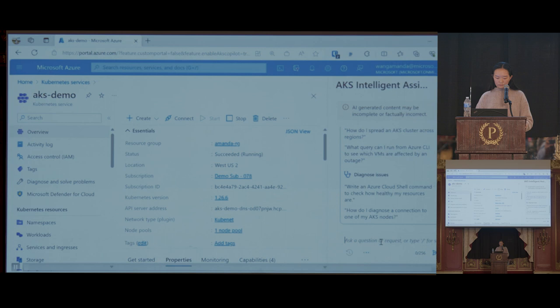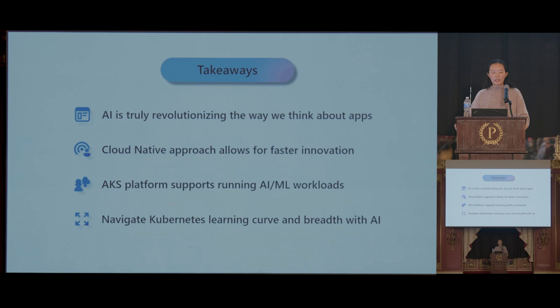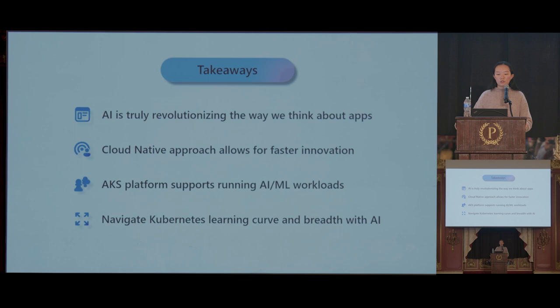A quick recap: AI is in a new era and it's truly revolutionizing how we think about apps, and a lot of companies are seeking this opportunity to innovate. Kubernetes and cloud native remain the platform and ecosystem that allows companies to pursue this faster innovation. The AKS platform offers a variety of features to support running AI and machine learning workloads — from InfiniBand to Artifact Streaming to Kaito. And with the help of AI, it can help new and existing users navigate the learning curve and keep up with new developments in this space. Thank you.